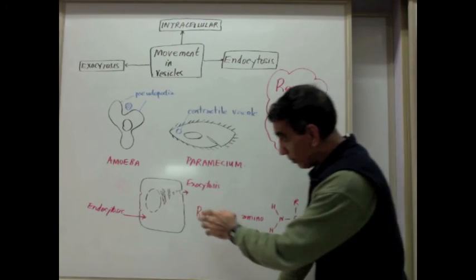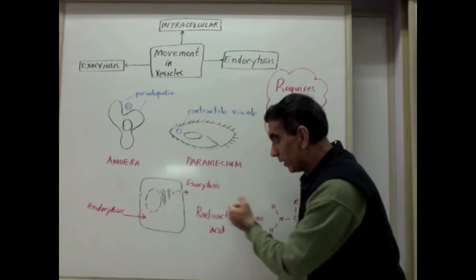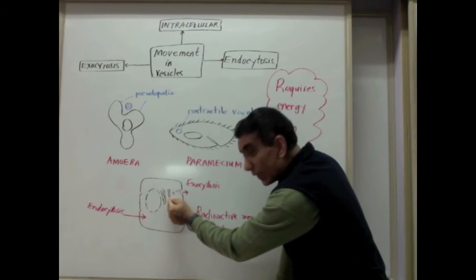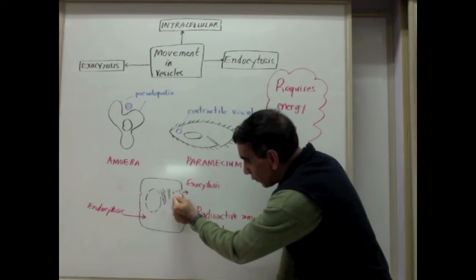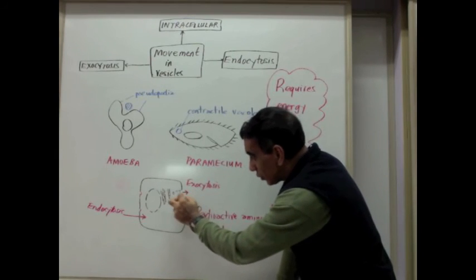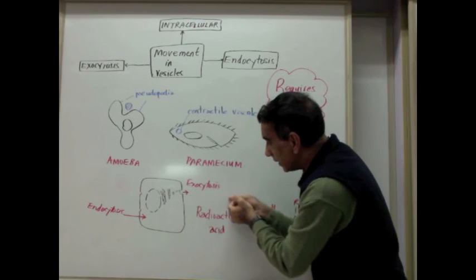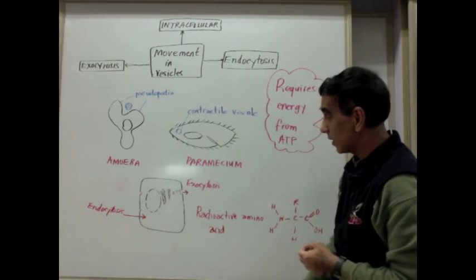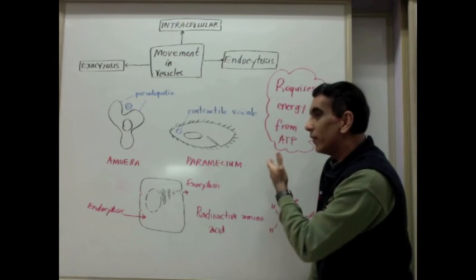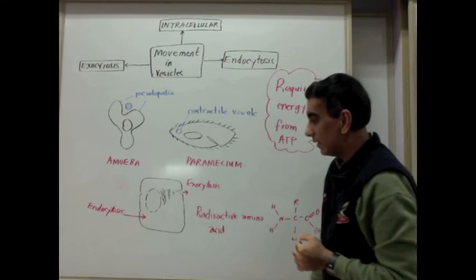Cells also manufacture a range of substances that have to leave one cell and move into the bloodstream. And these tiny vesicles break off from structures like the Golgi apparatus and move toward the cell membrane, where the membrane of the vesicle joins with the cell membrane and the contents of that vesicle are released. This is exocytosis. Paramecium also provides an example of exocytosis as it gets rid of waste in contractile vacuoles.